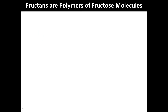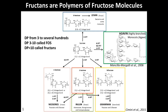Fructans are polymers of fructose molecules, and their synthesis starts from the disaccharide sucrose. Depending on the position in which the fructose units are attached, quite a number of different fructan structures can be differentiated. The well-known structures are linear structures like levans or inulins, but particularly in cereals we also have branched structures like the graminans, which have a terminal glucose moiety, but also neo-series fructans, which have an internal glucose.